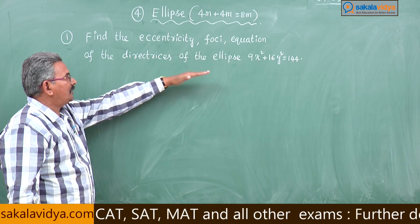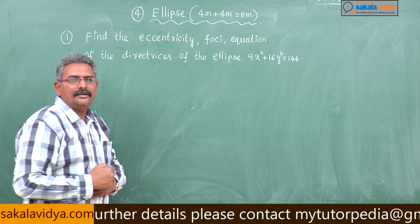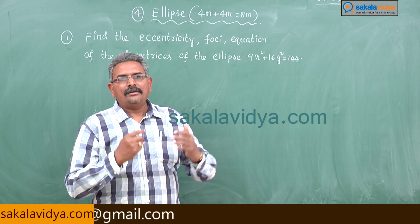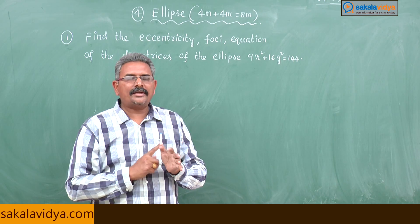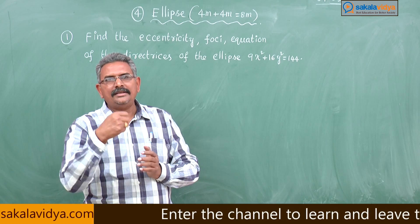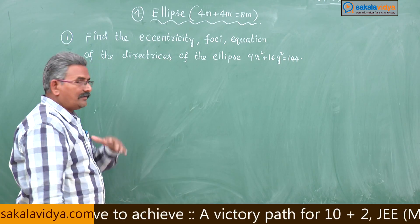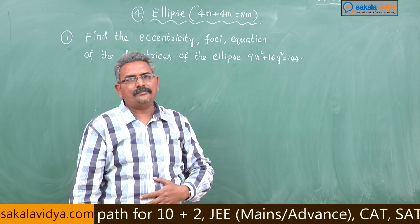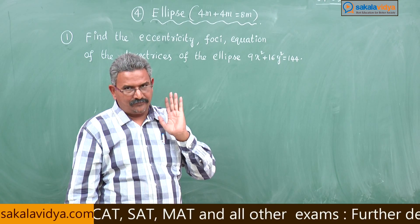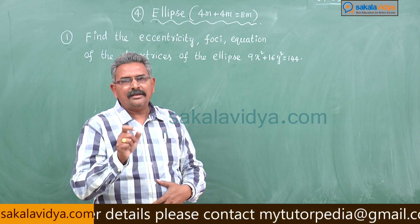First, we have to put the equation of the ellipse in the standard form. The standard form of the ellipse is x²/a² + y²/b² = 1. After putting the given equation in standard form, by comparing we get the values of a² and b². After getting a² and b², we can find the eccentricity using E = √((a² − b²)/a²). Then we find the foci as (±ae, 0) and the equations of the directrices as x = ±a/e.